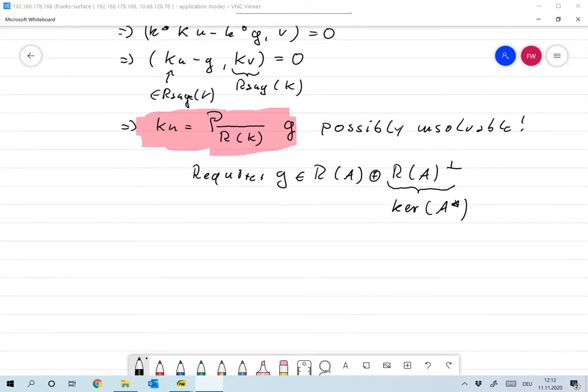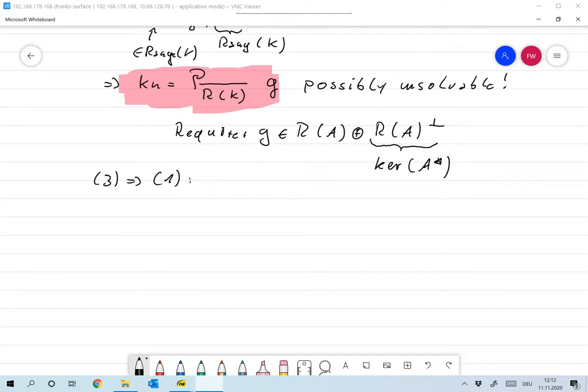That's the problem we will be talking about several weeks probably. Let me continue and show that if we have three then it also follows one. Well, for all v in x, we have the norm of kv minus g. Let's let me do it correctly, so let's now assume that ku is equal to pg, and let's take the norm of kv minus g for any v in x.